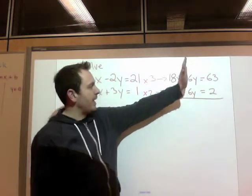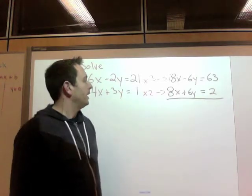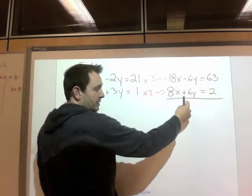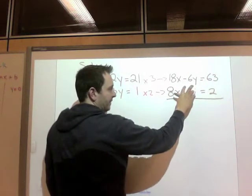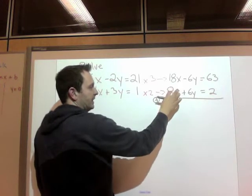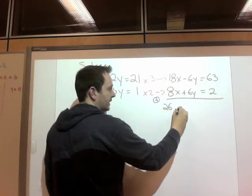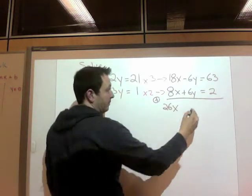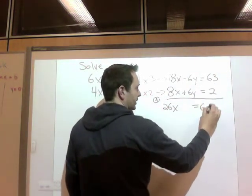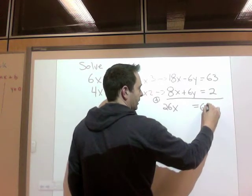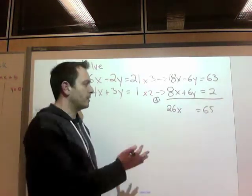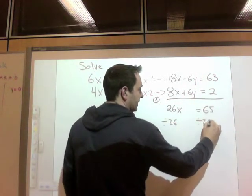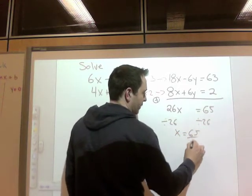Now, what I need to do is add or subtract. Because my y's are the same coefficient, if they have different signs, I add. So 18 and 8 is 26x. Negative 6 plus 6 is gone. And 63 plus 2 is 65. So now what we need to do is we need to get this x alone. So I'm going to divide both sides by 26. And I get x equals 65 over 26.